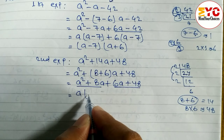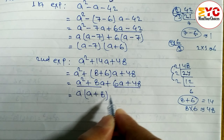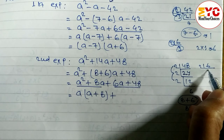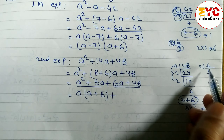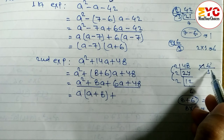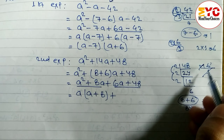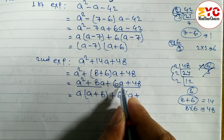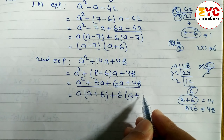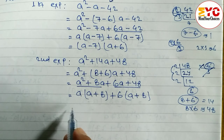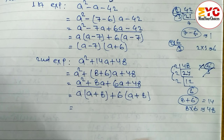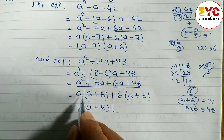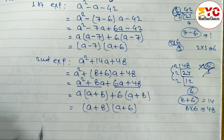Common from the first two terms is a, giving a(a plus 8). For the last two terms, 6 is common, giving 6(a plus 8). Since both brackets match, we take (a plus 8) as common, and the remaining factor is (a plus 6). So the second expression factorizes as (a plus 8)(a plus 6).